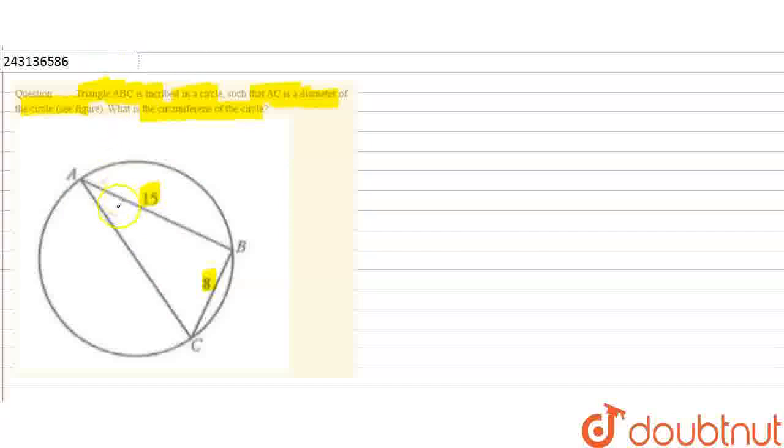As you can see, this is the diameter AC. We know that a diameter subtends a right angle at any point on the circle, hence forming a right angle at B.